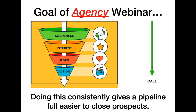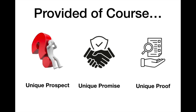When we do a webinar, we abide by three core principles. Number one: we have a unique prospect in mind. It is not possible to do a great webinar if you don't have a very unique person with a very unique problem, because you can't make a unique promise — which is the second thing. And then in terms of results and outcomes, you really want to make sure that you provide proof.